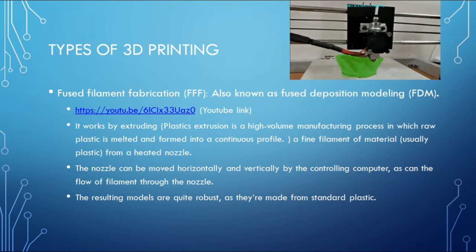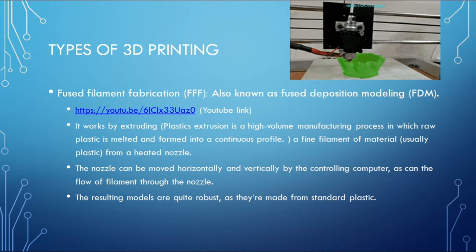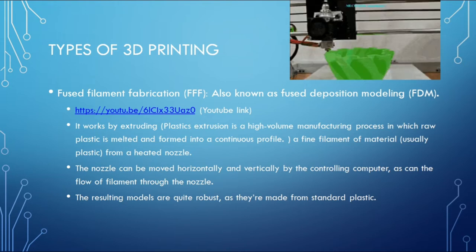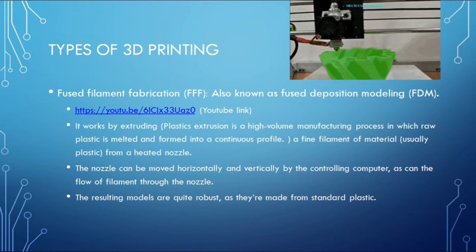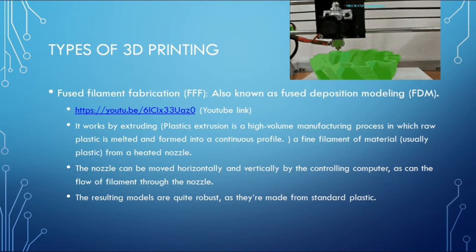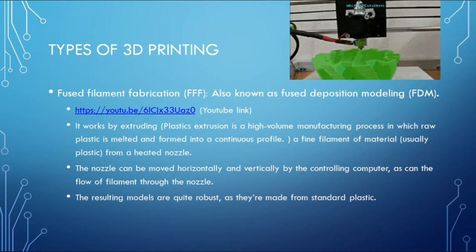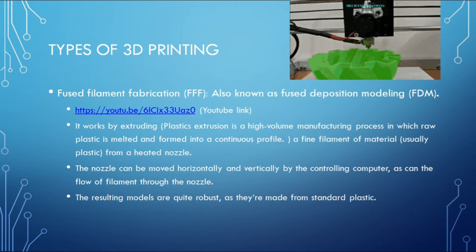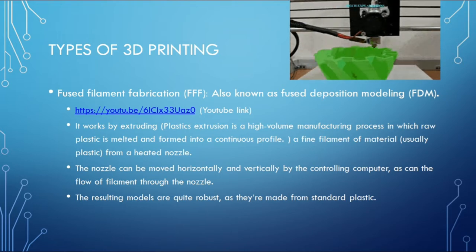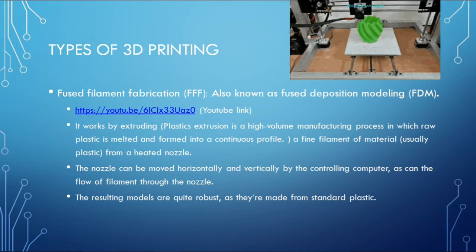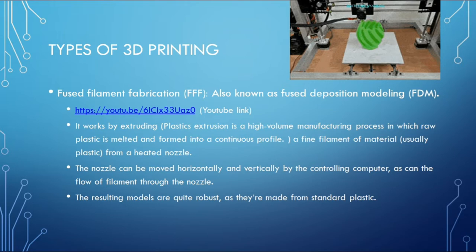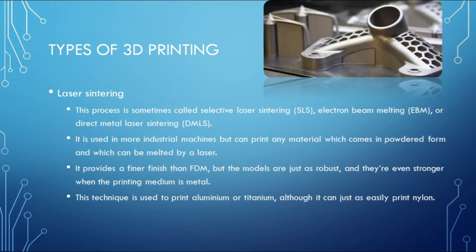The first method of 3D printing is Fused Filament Fabrication (FFF), also known as Fused Deposition Modeling (FDM). It works by extruding a fine filament of material — usually plastic — from a heated nozzle. The nozzle can be moved horizontally and vertically by the controlling computer. The resulting models are quite robust as they are made from standard plastic.